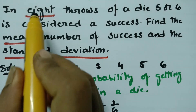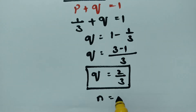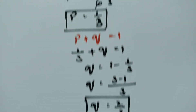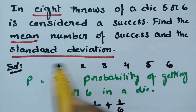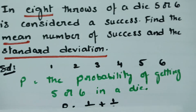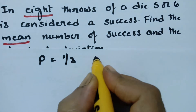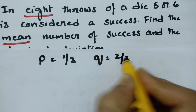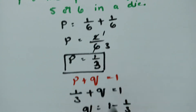From the question, it is clear that N is given as 8, since there are 8 throws. So our known values are: P is equal to 1 by 3, Q is equal to 2 by 3, and N is equal to 8. We now have to find out the mean and standard deviation.